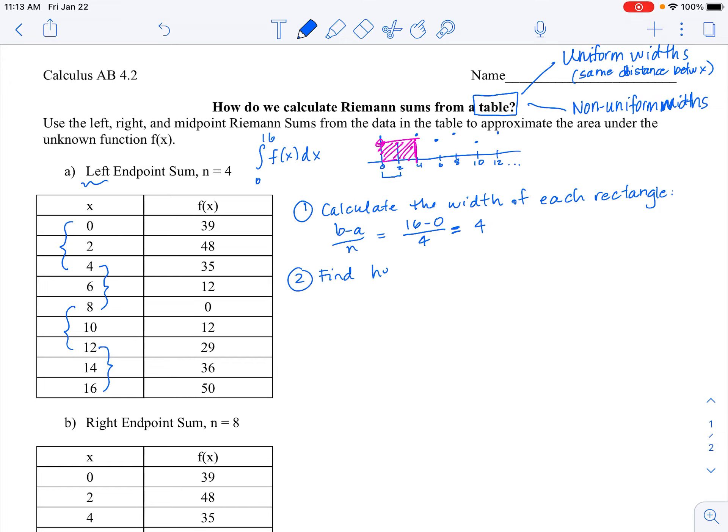Now we're going to find the heights. Our first interval is 0 to 4. So the height of the rectangle at that point, we're using 0 because it's the left endpoint, and the height that goes with that is 39. And then from 4 to 8, 4 is the left x value of that interval, so we will use 35. And then 8 to 12, 8 is the left endpoint, so we'll use the y value that goes with that of 0. And then 12 to 16, the y value at 12 is 29, and that is what we will use for our height.